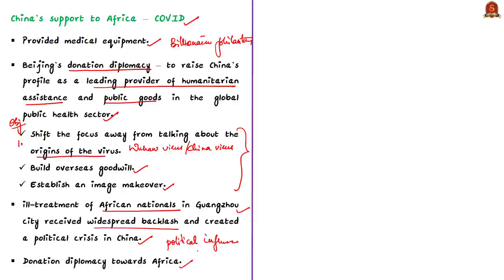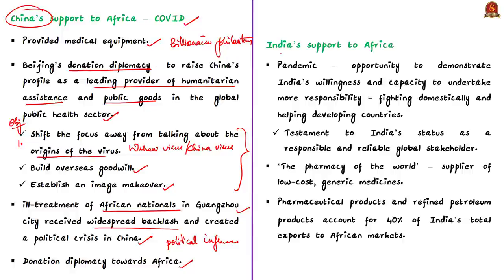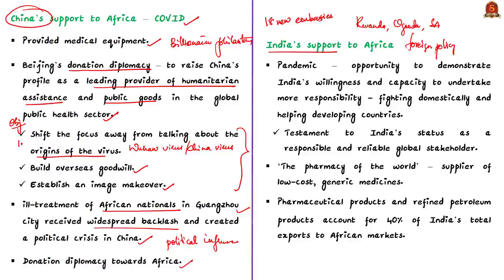Now let us focus on India's support to the African continent. Africa holds a central place in India's foreign policy and economic policy. In recent years, Prime Minister Narendra Modi made state visits to Rwanda, Uganda and South Africa. India is also planning to open as many as 18 new embassies in the African continent. According to the authors, the pandemic presents another opportunity for India to demonstrate its willingness and capacity to undertake more responsibility — even with limited resources, India is fighting the virus domestically as well as helping developing countries in need.